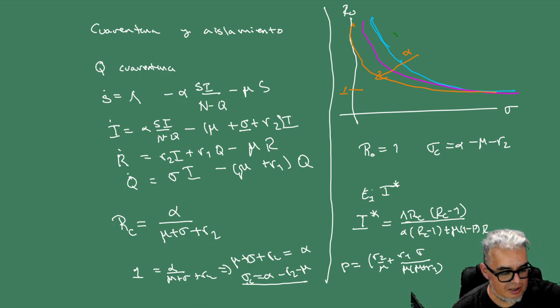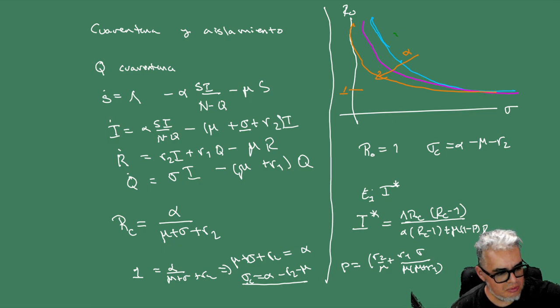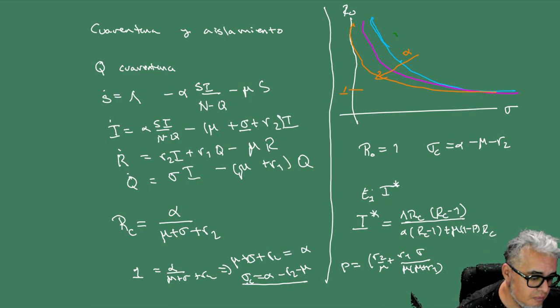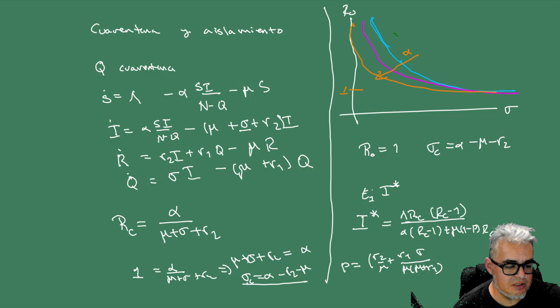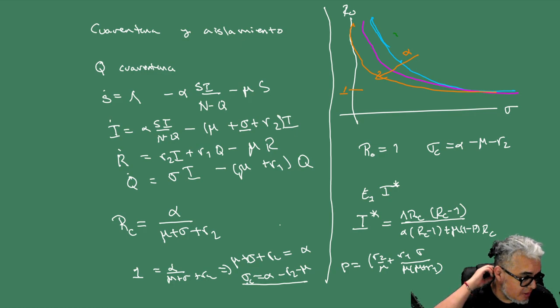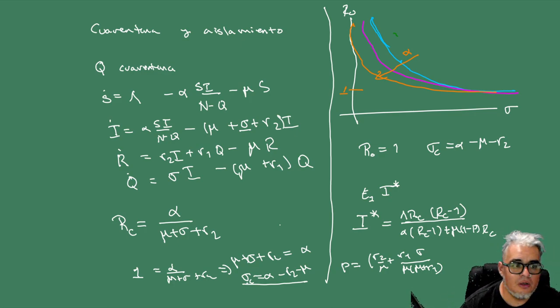Esto va a decrecer mientras sigma decrece. Ahora supongamos que tenemos una segunda clase de aislamiento. Vamos a distinguir los que se van a cuarentena antes de enfermarse y los que van a cuarentena después de enfermarse. Entonces aquí tenemos que distinguir también infecciosos de expuestos.